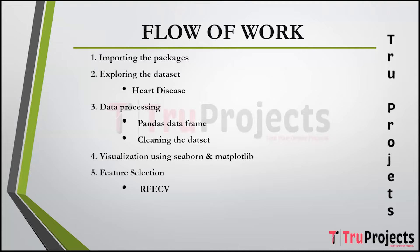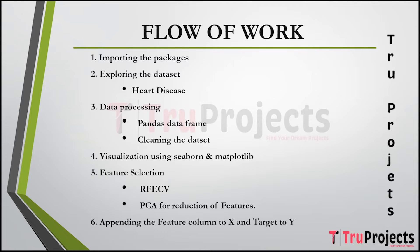Feature selection: RFE-CV (Recursive Feature Elimination with Cross-Validation) automatically selects the most relevant features from the dataset to improve model performance. PCA (Principal Component Analysis) is used to reduce the dimensionality of the data by creating new principal components while retaining the most critical information. The dataset is then divided into two parts: features as X and the target variable as Y.